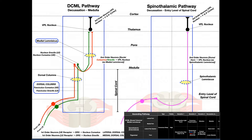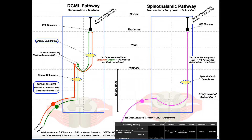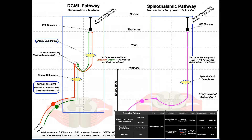Regardless of which tract we're talking about, these tracts decussate — meaning they cross over — at the level of the medulla. If the right side is over here, these tracts cross from right to left at the medulla. That decussation is extremely important because the clinical manifestations of lesions depend on where decussation occurs. For comparison, the spinothalamic pathway decussates at a very different level, so make sure you remember where each one crosses.